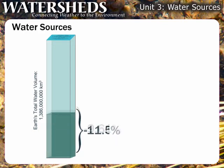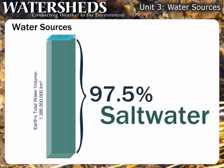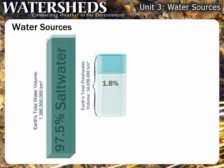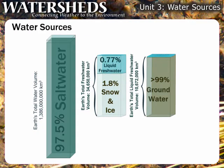97.5 percent of the Earth's water is saltwater. Another 1.8 percent is stored as snow and ice. This leaves 0.77 percent as liquid freshwater. But the vast bulk of this liquid freshwater — over 99 percent — is underground, and some of that is unobtainable.